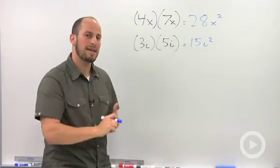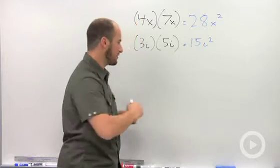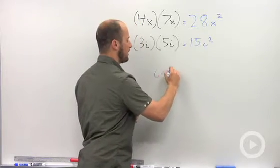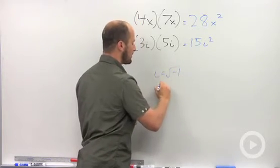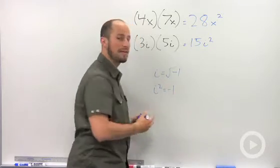Now part of the definition of i is that i is equal to the square root of negative 1, but the other part is i squared is equal to negative 1.